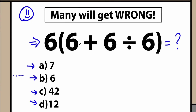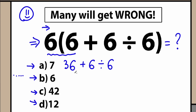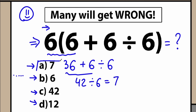A lot of students might say let's just do this from left to right in a strict order. So we have 6 times 6 equal to 36. The next thing we have plus 6 divided by 6, so from left to right we have 42. We still have this division, so 42 divided by 6 equals 7. This is option A.